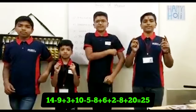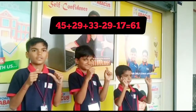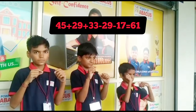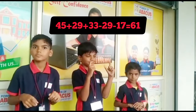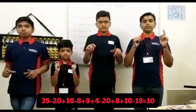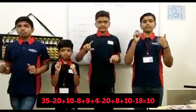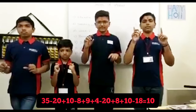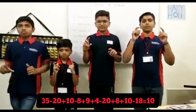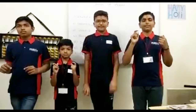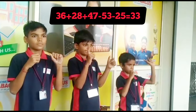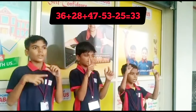That is 25. Good. 45, 29, 33, minus 29, minus 17 — that is 61. Correct. 35, minus 20, 10, minus 8, 9, 4, minus 20, 8, 10, minus 18 — that is 10. Good. 36, 28, 47, minus 53, minus 25 — that is 33. Correct.